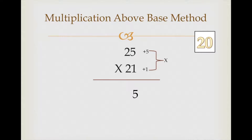Now we need to cross add and check whether the results are the same. 25 plus 1 makes 26, and 21 plus 5 also makes 26. Write down 26 and multiply by 2 because we have considered base 20. When we multiply 26 and 2 we get 52. Write down 52.